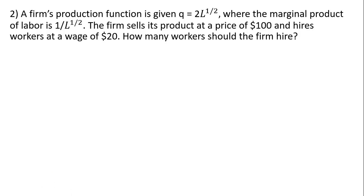Question 2. A firm here with a slightly different total product of labor function: Q equals 2 times the square root of labor, where the marginal product of labor in this case will be given by 1 divided by L to the 1/2 power. The firm sells its product at a price of $100 — again, this is a competitive marketplace and this firm is a price taker — and it hires workers at the going market wage of $20. How many workers should the firm hire?